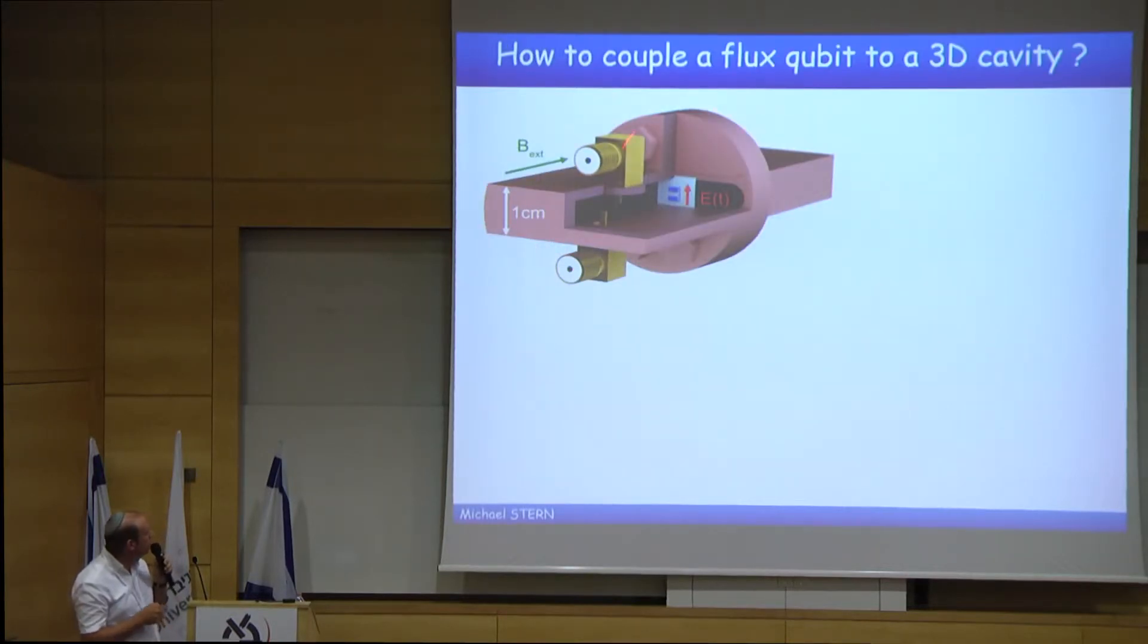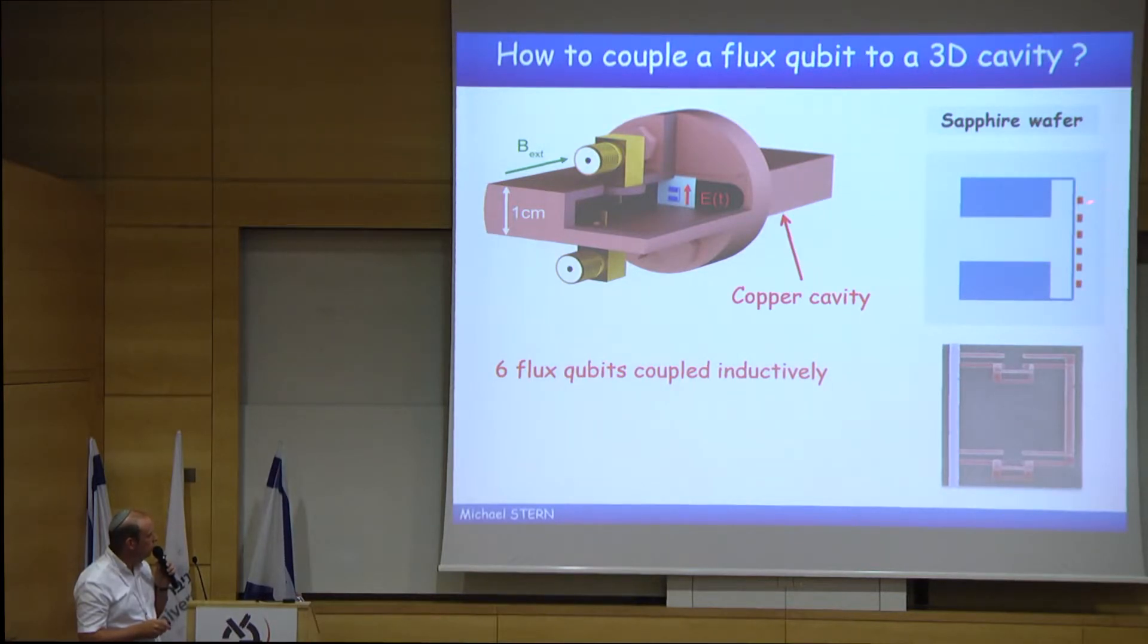Flux qubit in 3D cavity. This is a schematic of the cavities that I used. It's a three-dimensional cavity made of copper. It's made of copper in order to apply an external magnetic field and we measure the cavity by the transmission via the two antennas. In the middle of the cavity, we put a resonator, a lumped element resonator on the sapphire wafer. And this lumped element resonator is connected, is coupled to one, two, three, four, five, six flux qubits. The advantage of this geometry is that by changing the surface of each qubit, it's possible in a single run to measure several flux qubits. And the reason why we have this LC resonator is because the flux qubit is very small. So in order to have a coupling with the cavity, we need to go through an intermediate resonator.